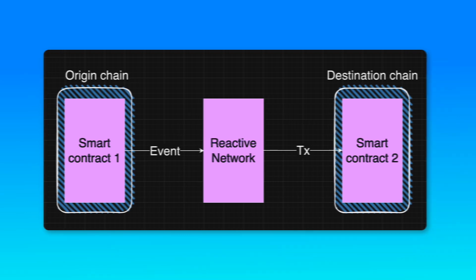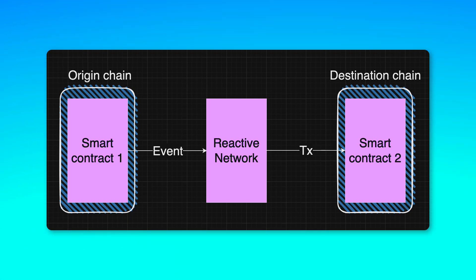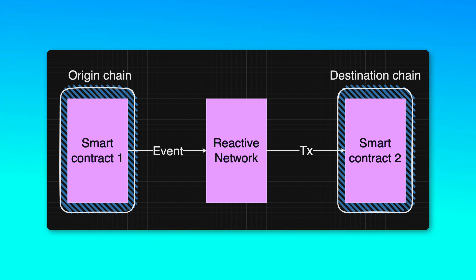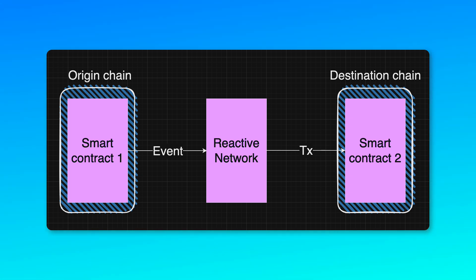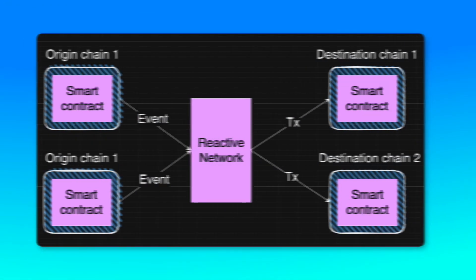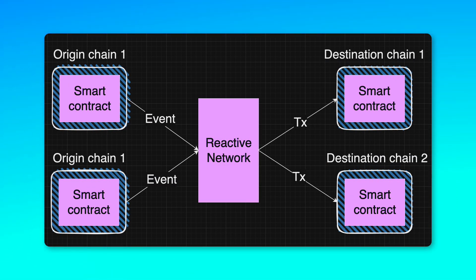Here's how it works. First, you have the Origin Chain, which can be any EVM-compatible blockchain — this is where events will be emitted. Then you have the Reactive Network, which receives events from the Origin Chain and decides what to do with them. And finally, you have the Destination Chain, which can also be any EVM-compatible blockchain. The Reactive Network will send a transaction to this Destination Chain in reaction to the event coming from the Origin Chain. The Destination Chain can be different from the Origin Chain, or it can be the same. We can also have more complex scenarios with several Origin or Destination Chains.